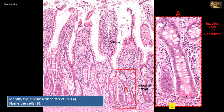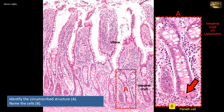The lining epithelium is a simple columnar epithelium formed mostly of enterocytes and goblet cells. However, there are other types of cells, like the ones marked in B — these are Paneth cells. They are characteristically located at the base of the crypts, as clearly shown here. They have prominent eosinophilic apical granules. The granules contain antimicrobial enzymes and provide a first line of defense against disease-producing microbes that survive passage through the stomach.